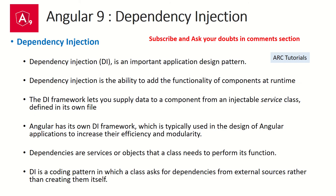So what is dependency injection? Dependency injection is an important application design pattern. Using dependency injection, it's an ability to add functionality to new components at runtime. In most use cases, your components will require some kind of external dependent files, which is what we call services. We will be able to add those services or dependencies at runtime. The dependency injection framework lets us supply data to a component from an injectable service class.